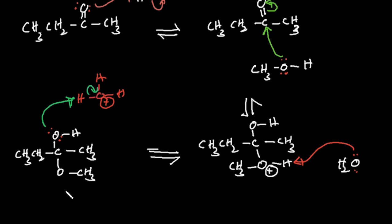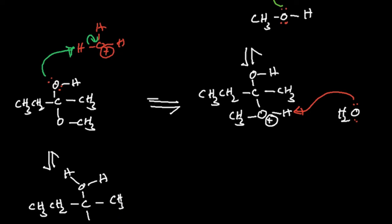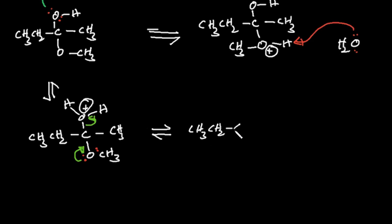So we have our intermediate with CH₃, CH₂, and CH₃ groups. You can see this oxygen has two lone pairs. One lone pair makes a new bond and eliminates this H₂O molecule, making a new intermediate — an oxocarbenium ion with a positive charge.